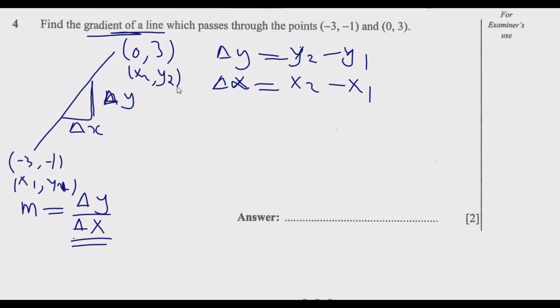Once you label them it becomes straightforward. To find m, which is the gradient, it will be y2 minus y1. So y2 is 3 minus y1, which is -1. So -1 in brackets, watch out for the negatives and the brackets.